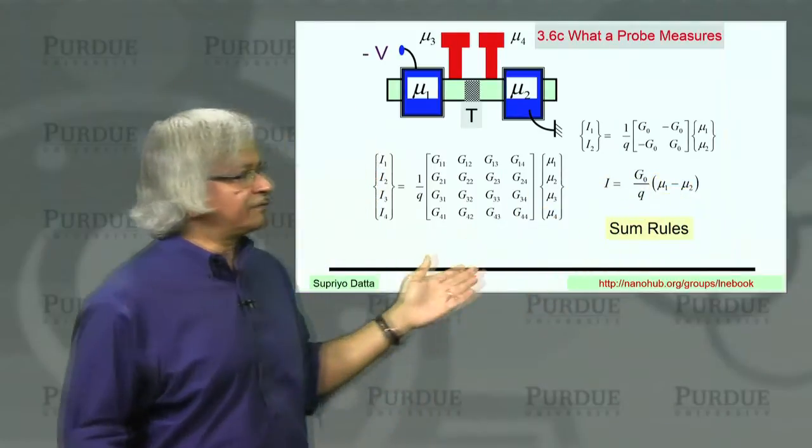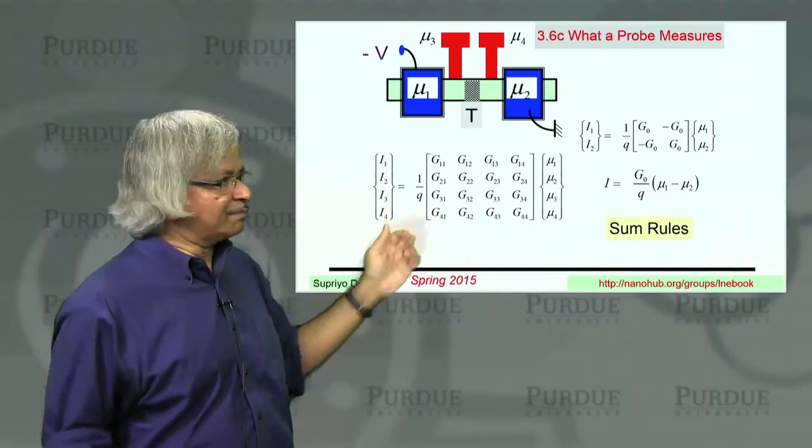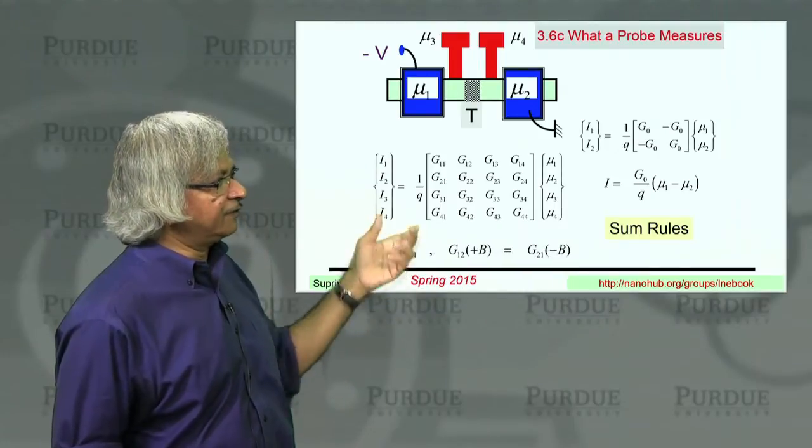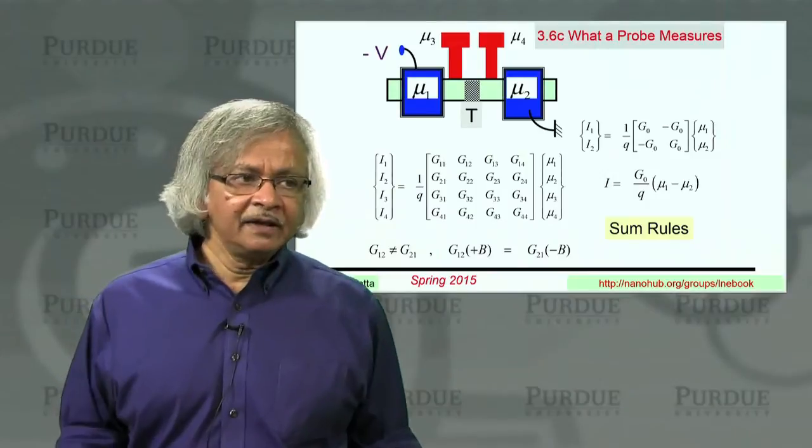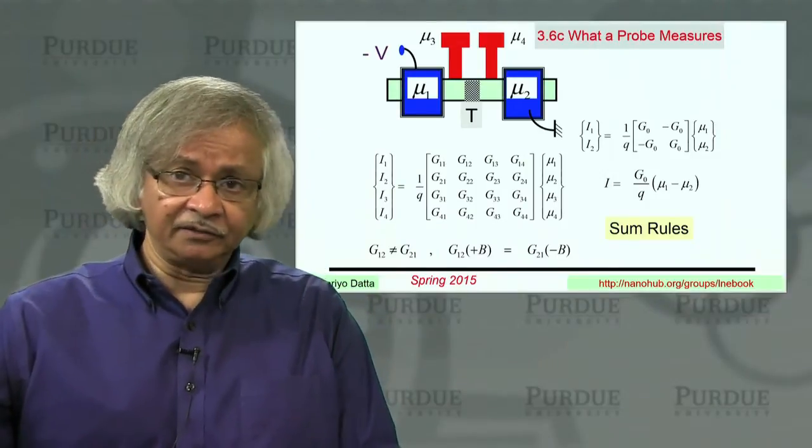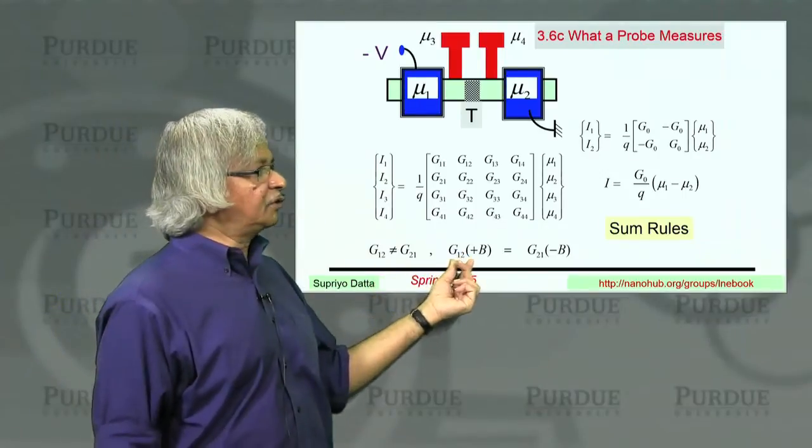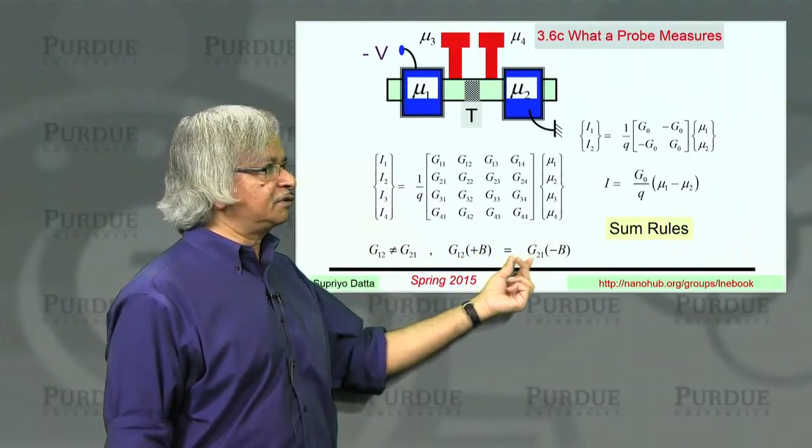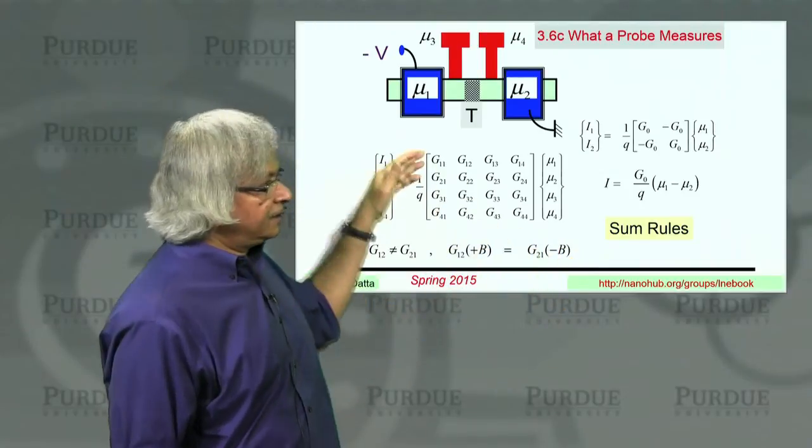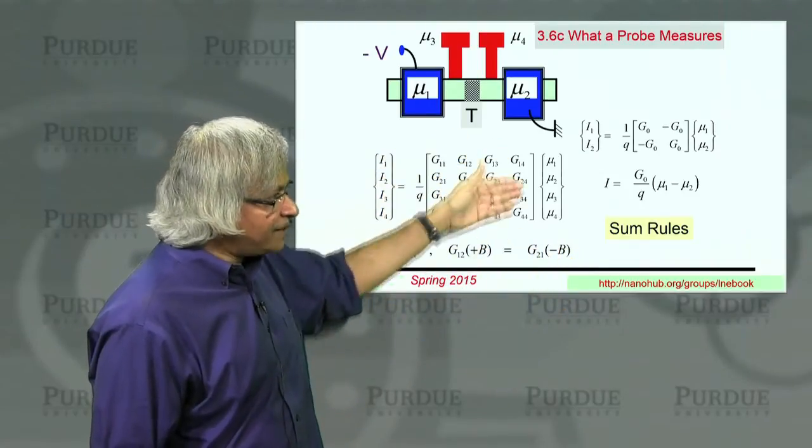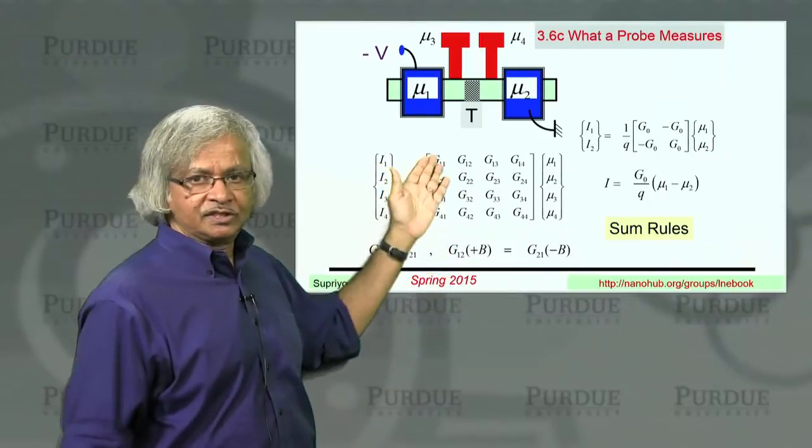But once you have multi-terminal devices, it's much more subtle. There are many more possibilities. In general, g12 doesn't even have to be equal to g21 if you have a system like in a magnetic field. In a magnetic field, g12 for positive magnetic field is equal to g21 for negative magnetic field. And, of course, as I mentioned, the matrix elements should still obey the sum rules that I mentioned.